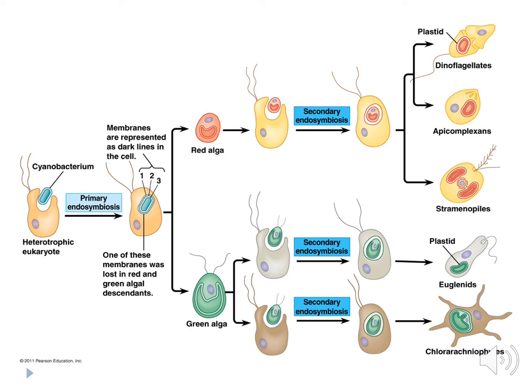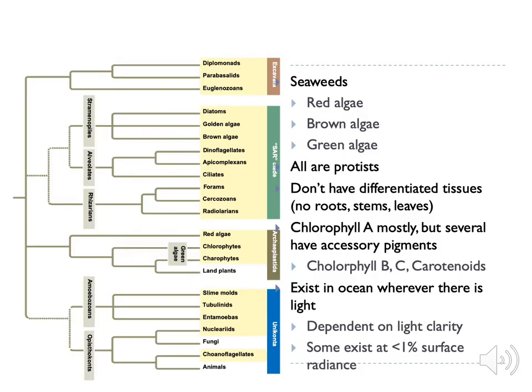Red and green algae were likely the ancestors to a lot of the other protists we observe in the seas, in lakes, in waters, and in soil. Here is a phylogenetic tree portraying many of the classified protists. For the sake of this lecture, I want you to focus on these three types of seaweeds: red algae, brown algae, and green algae.